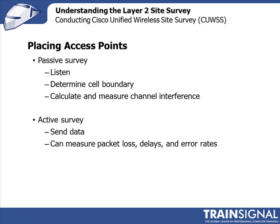With an active site survey, the client will actually be sending data to the access point and receiving data from the access point. Because you're sending data backwards and forwards, you can go beyond just measuring the RF and actually measure the performance of your data — looking at packet loss, packet delays, and packet error rates.